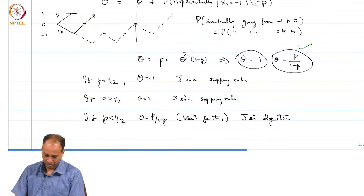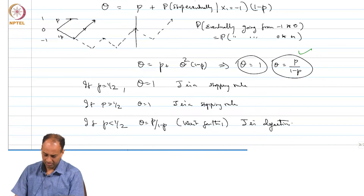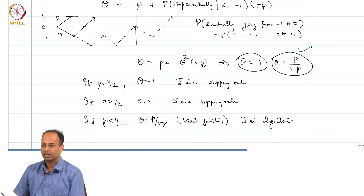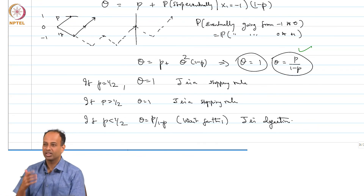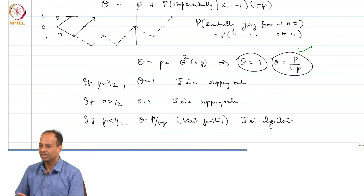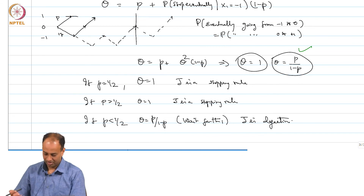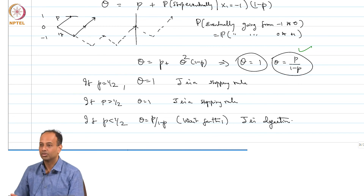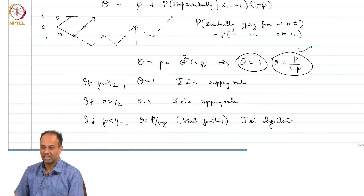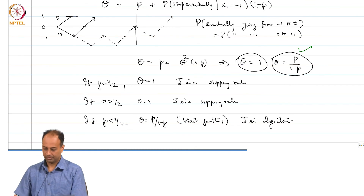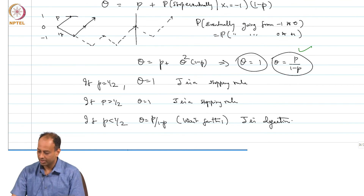We are almost out of time, but we can use Wald's equality if we can establish whether E[j] is finite or infinite. We will continue this next class, and we will also prove Wald's equality. Thank you.